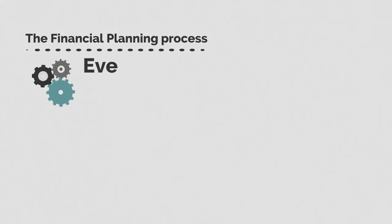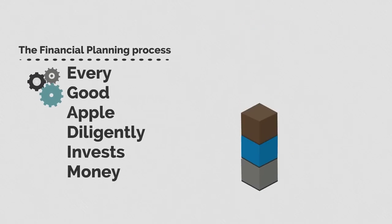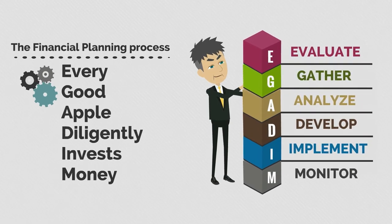The financial planning process takes a logical approach to meeting your financial goals. It's a six-step process. An easy mnemonic is every good apple diligently invests money, or EGADEM.